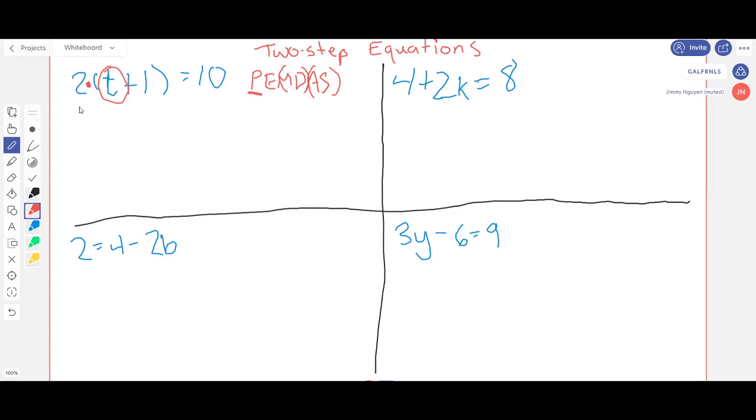However, since we are working backwards to solve for t, we're going to start on the right side of PEMDAS which tells us that we're actually going to do multiplication. If we were going this way we would do multiplication before parentheses.